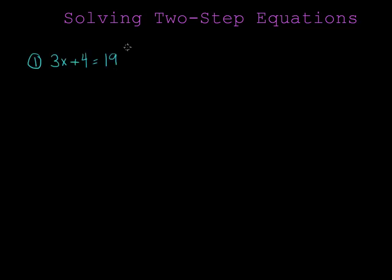We have 3x plus 4 equal to 19. In order to solve a two-step equation you should first remember order of operations. PEMDAS is the acronym that helps me remember parentheses, exponents, multiplication, division, addition and subtraction.